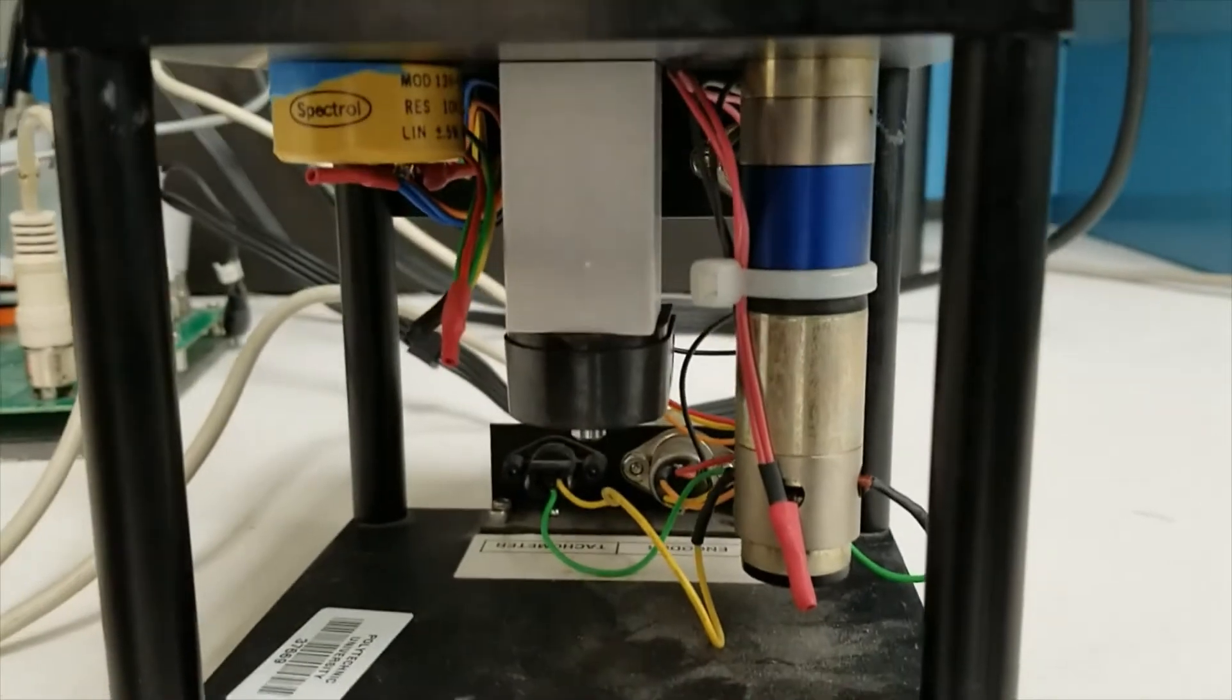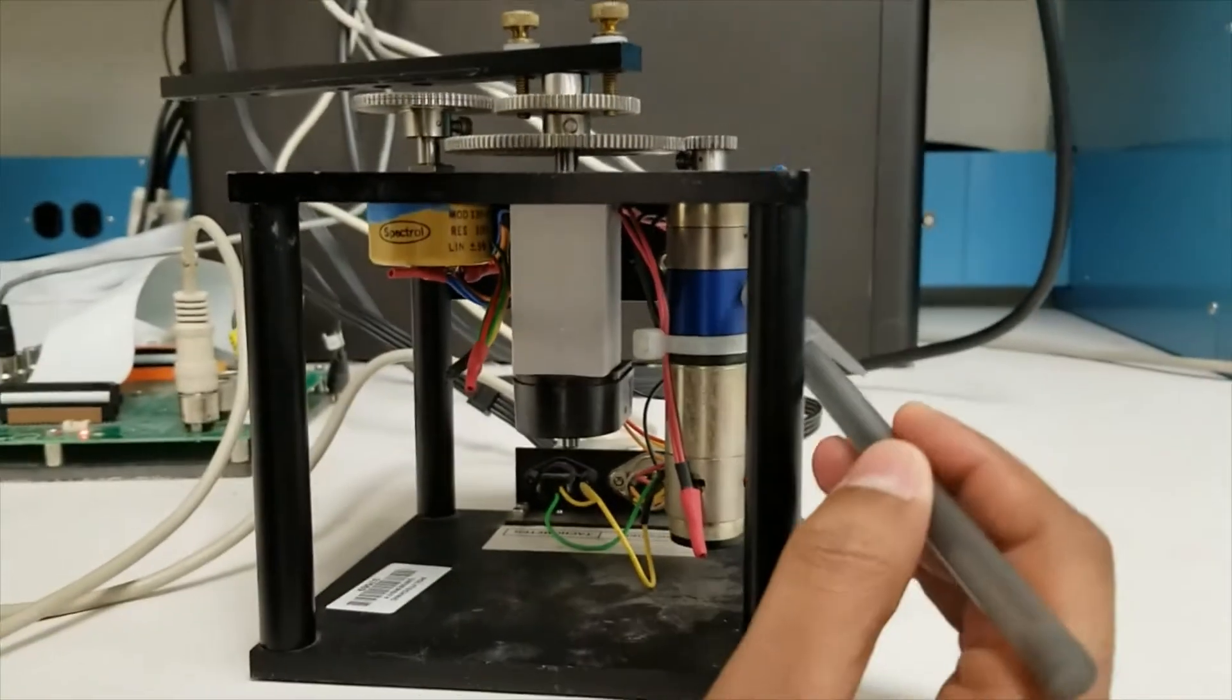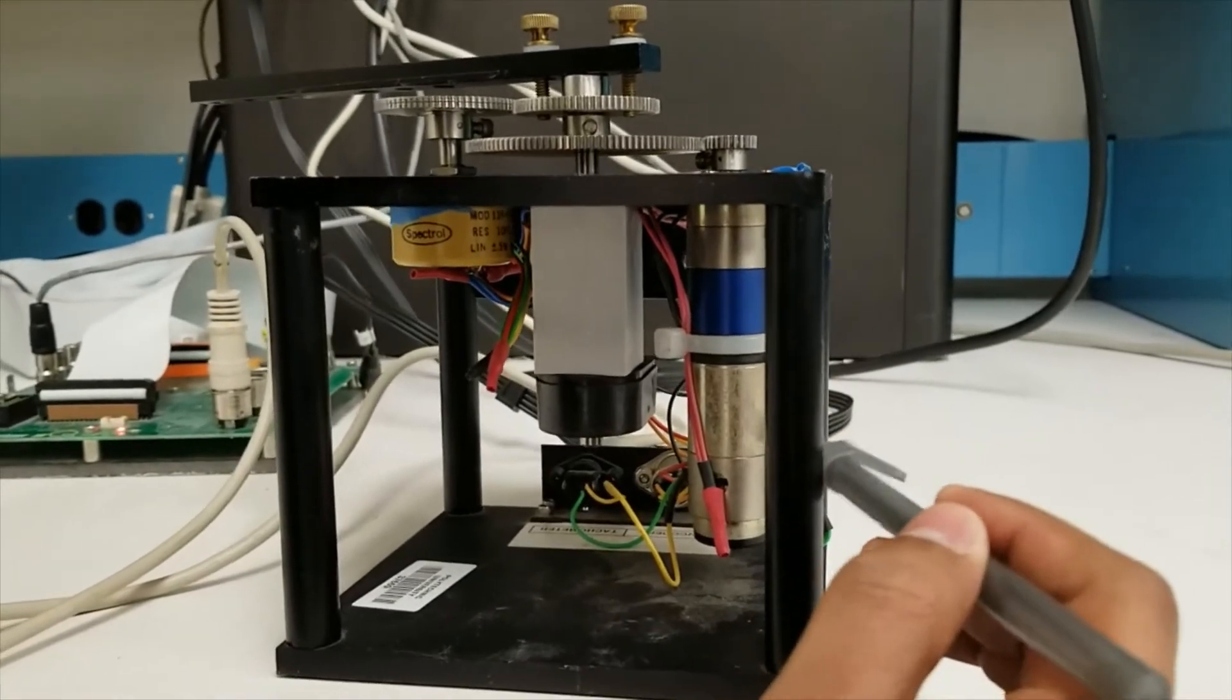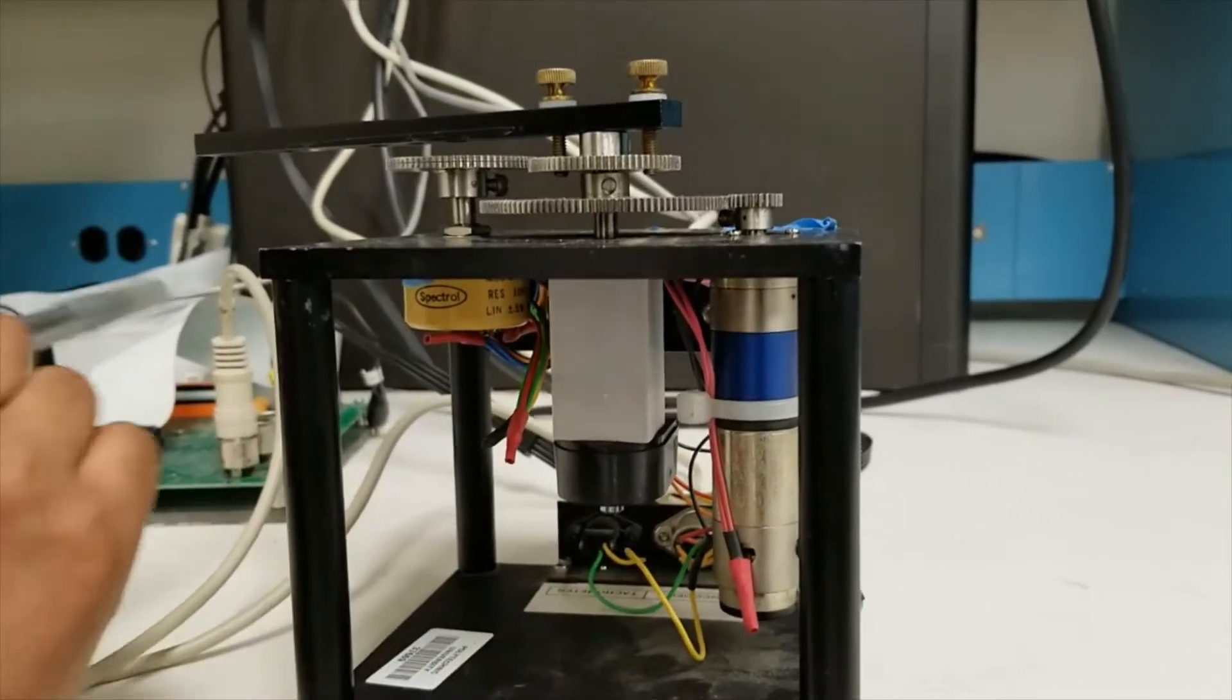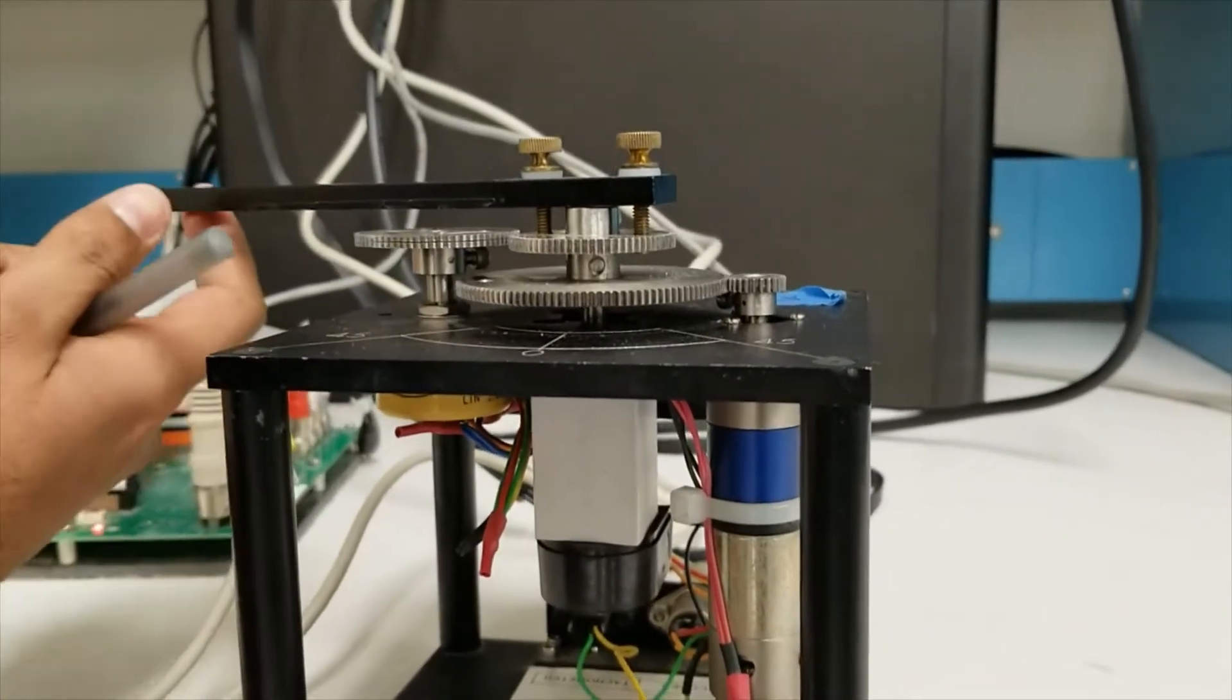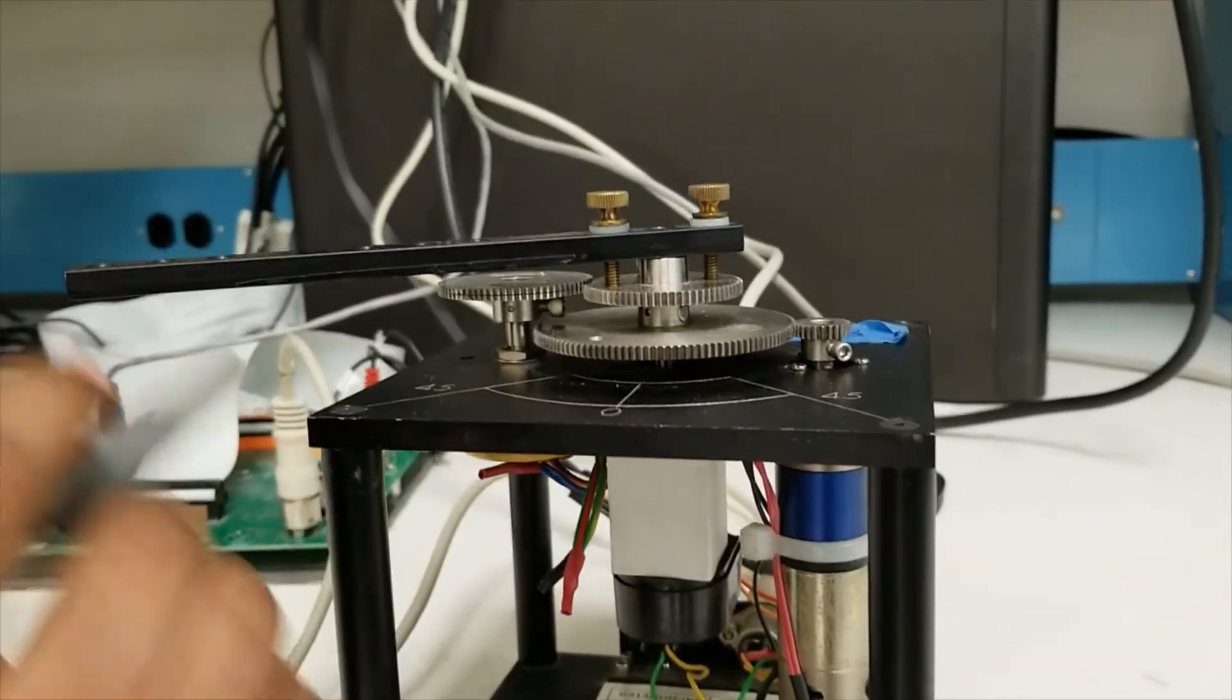As you can see, this is your potentiometer, this is your motor, this is your tachometer, this is your encoder, and this is your arm which will trigger all the motors and tachometers.